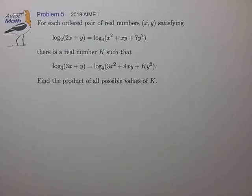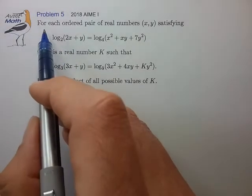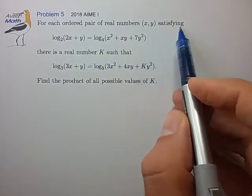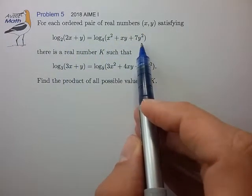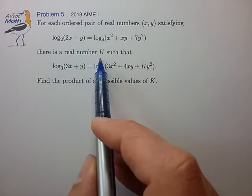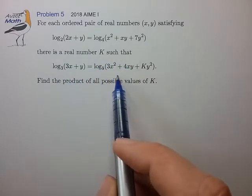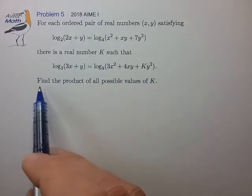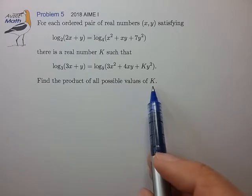Hi, this is problem 5 from the 2018 AIME I. For each ordered pair of real numbers x, y satisfying this first equation, there is a real number k such that this second equation is also satisfied. Find the product of all possible values of k.